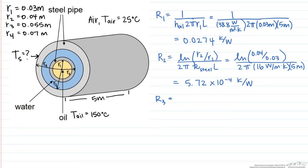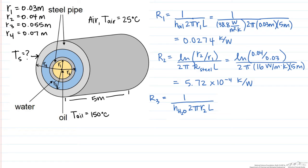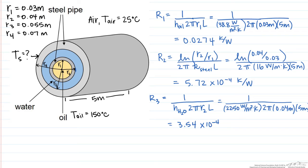R₃ is the convective resistance of the water touching the outside of the first steel wall. That is 1 divided by the convective heat transfer coefficient times 2π times our radius times the length of the pipe. That is going to equal 3.54 times 10 to the minus 4 Kelvin per watt.